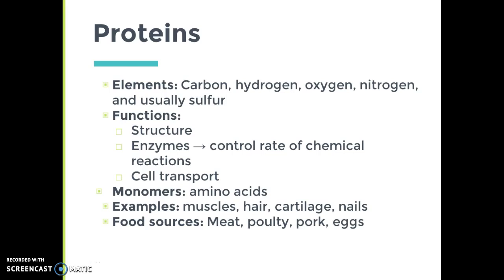Proteins are polymers made up of monomers, and the monomers of a protein are known as amino acids. Examples of where we can find proteins are in our muscles, our hair, cartilage, and nails.